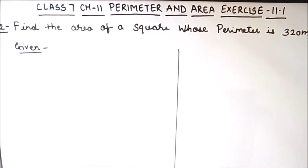Hello everyone, today in this video we are going to do question 2 of exercise 11.1, chapter 11 perimeter and area of class 7.